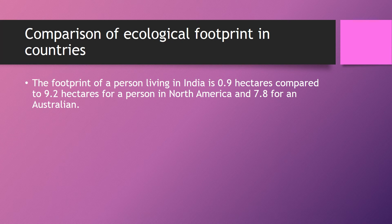Comparing ecological footprint across countries, the footprint of a person living in India, a developing country, is about 0.9 hectares. North America is about 9.2 hectares, and Australia is about 7.8 hectares. We all have a very big footprint here in Australia and we're using more resources than we can sustain.